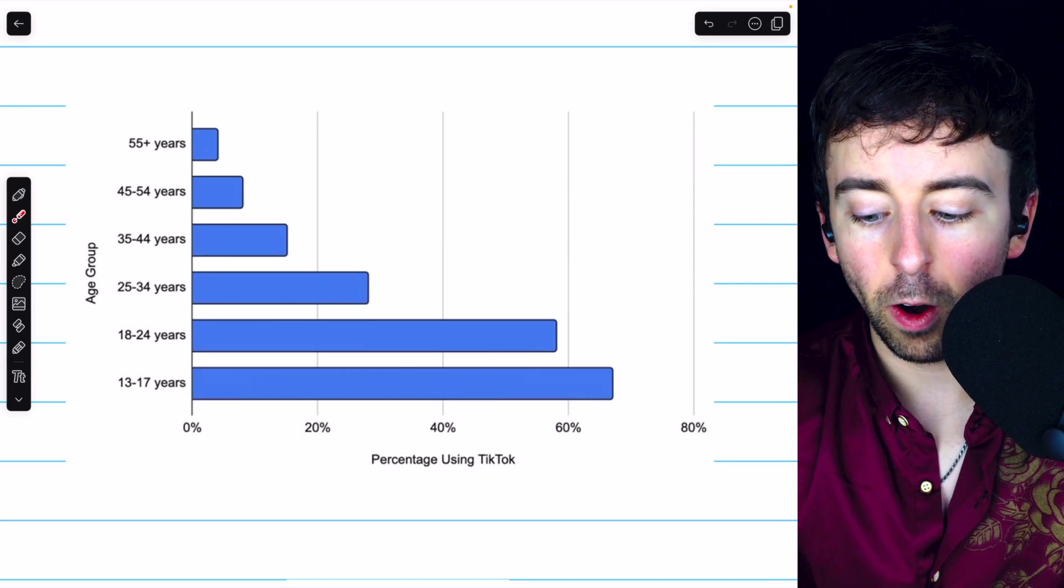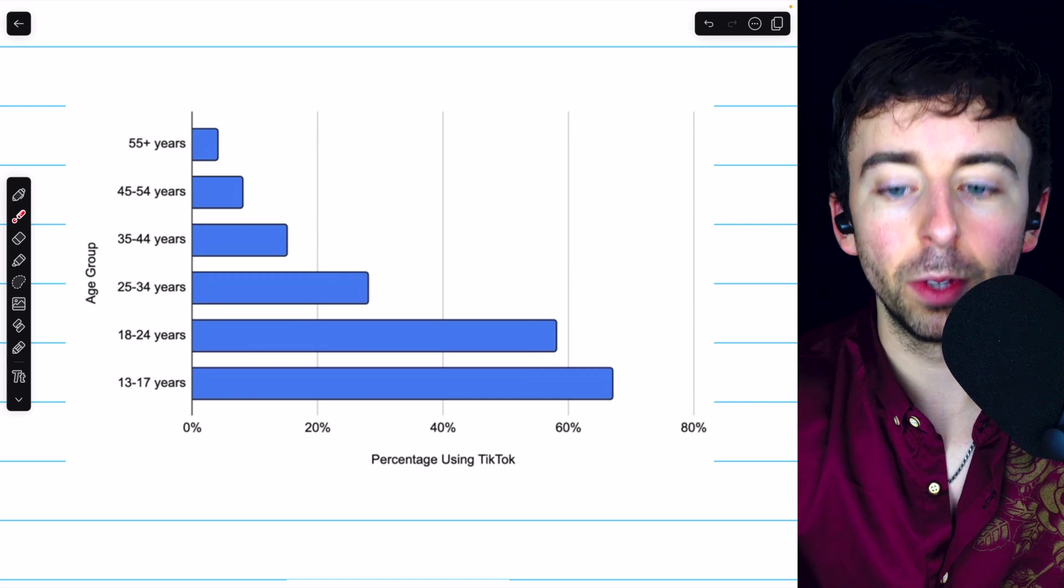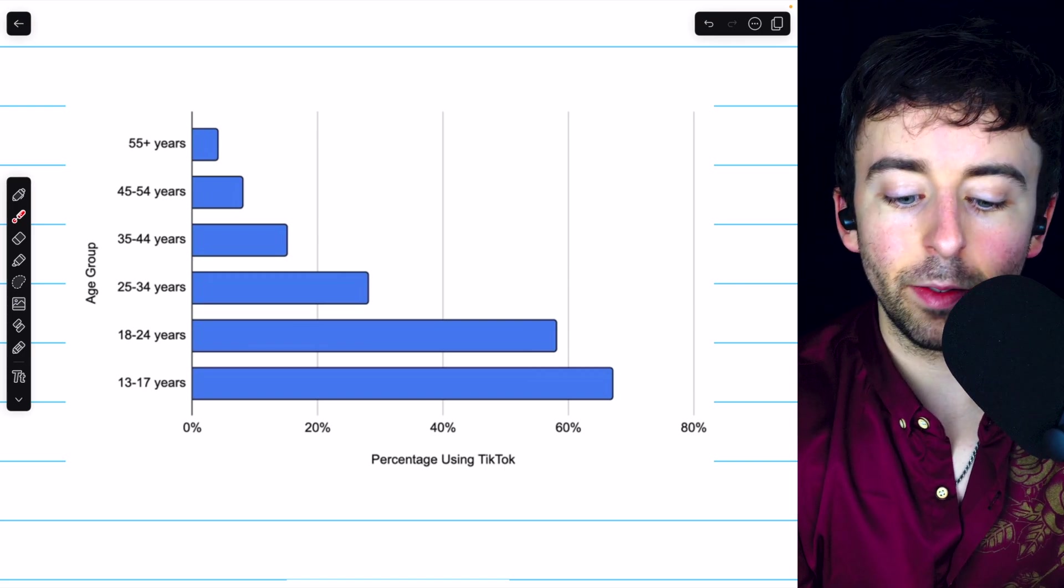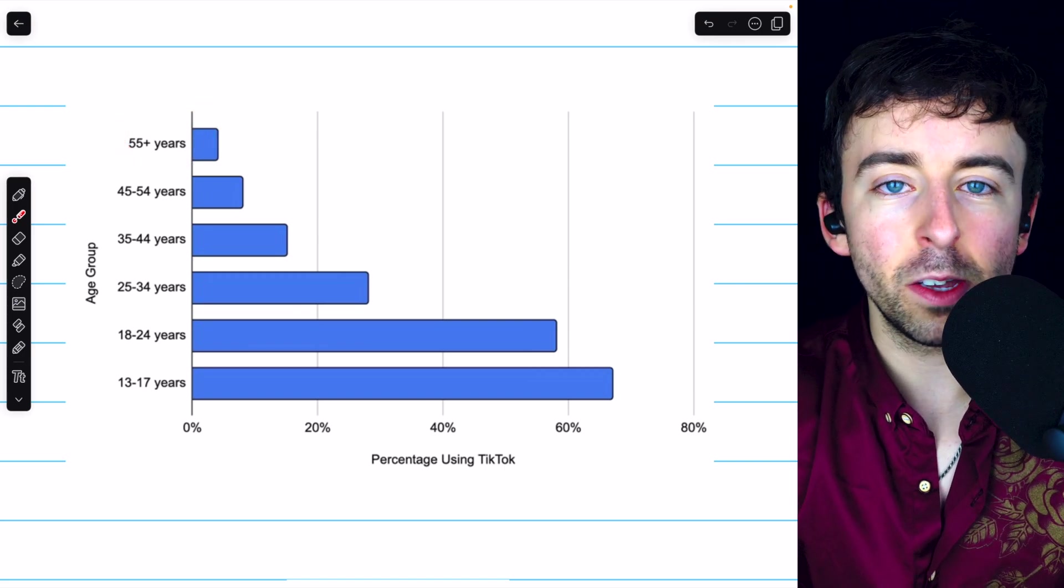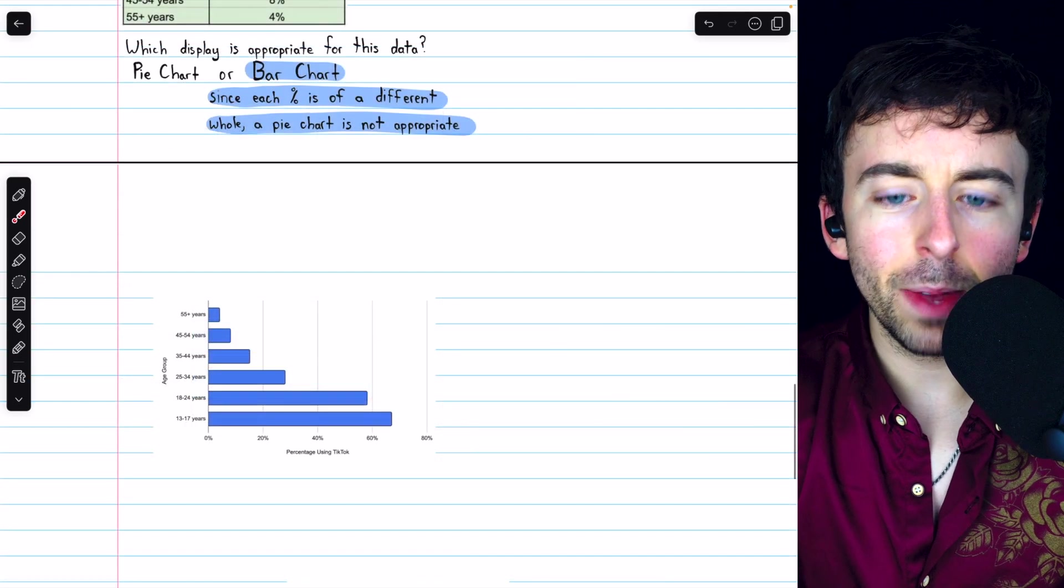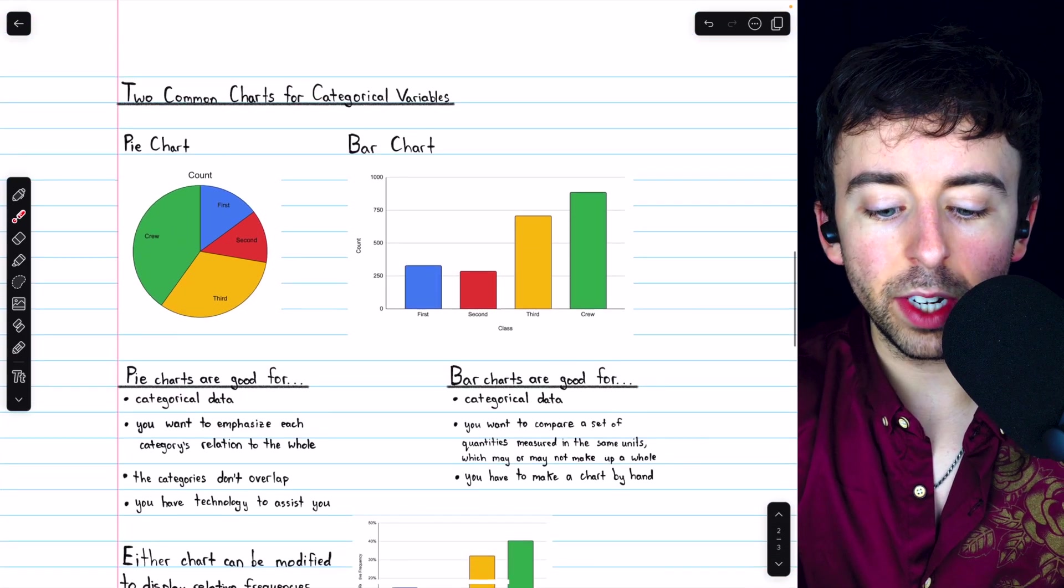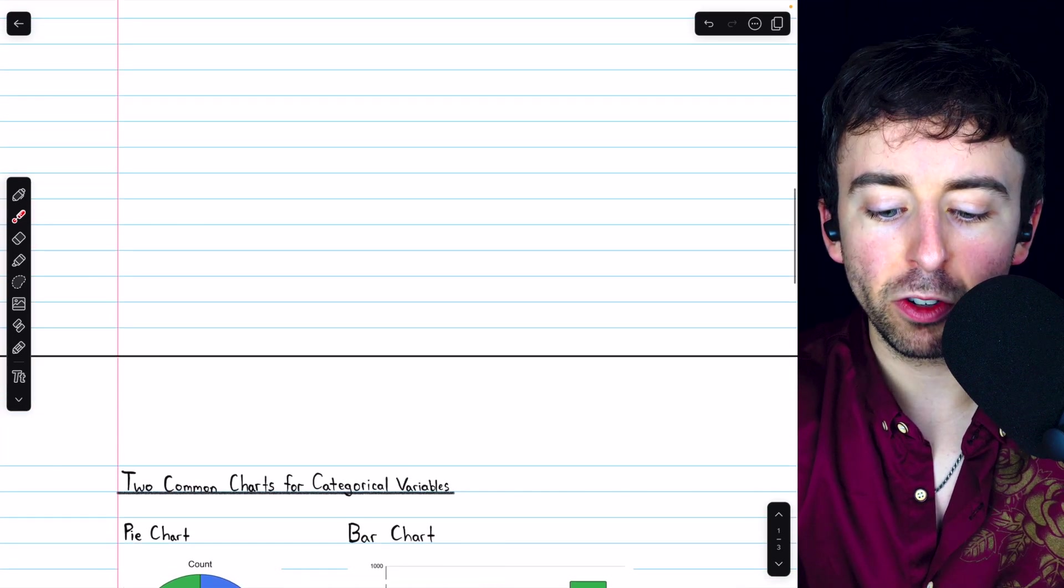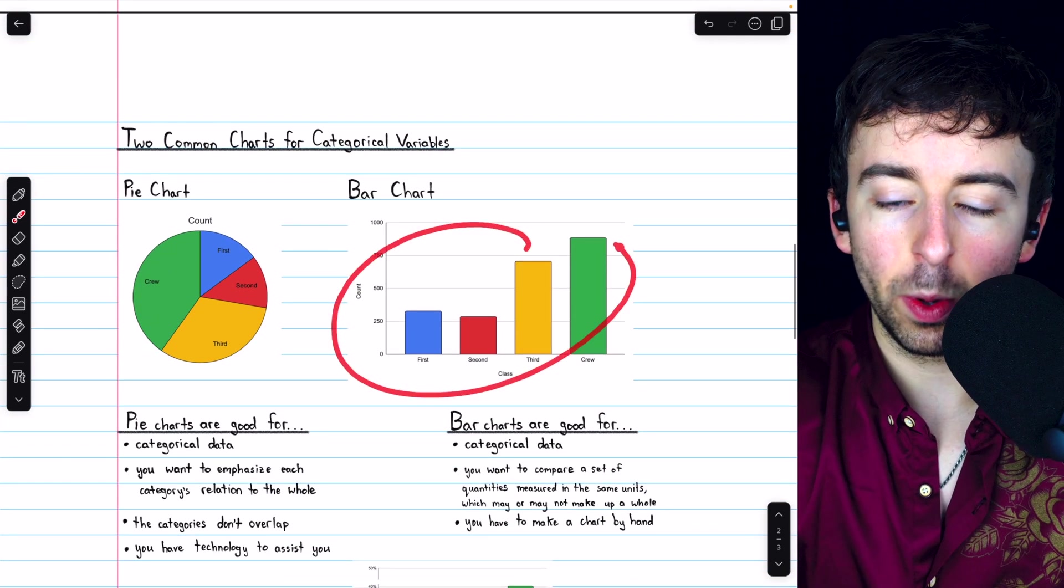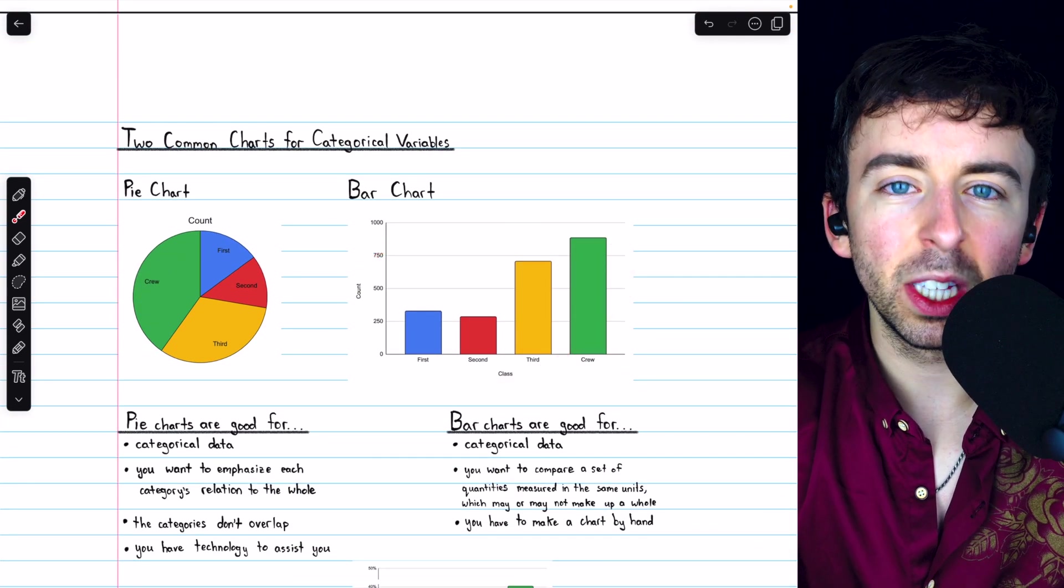But the bar chart does make it very easy to see that 13 to 17 year olds, by far, are the highest percent age group using TikTok. We can see that 55 plus year olds barely use TikTok at all. But that's a little bit about bar charts and pie charts. I'll leave a link in the description to a video where we just go through making a bar chart by hand, rather than showing you these pre-made ones. So if you really want to see the process, be sure to check that out.